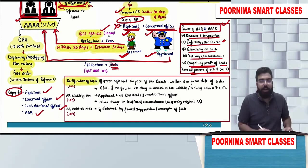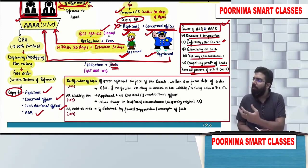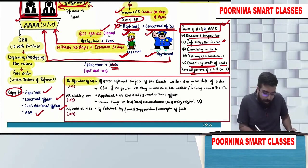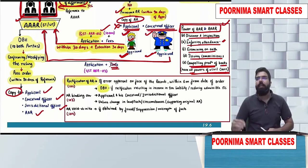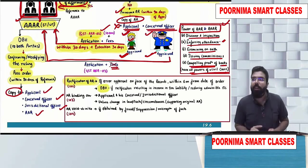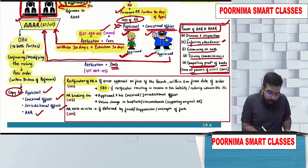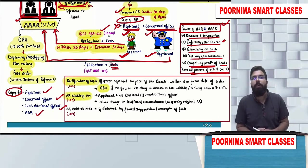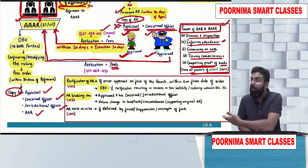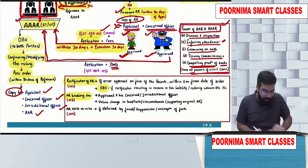If the advance ruling authority finds a mistake which is apparent from the record, it can be rectified within six months. If because of the rectification there is an increase in tax liability or reduction in input tax credit, an opportunity of being heard is to be given. An advance ruling shall be binding on the applicant, concerned officer, and jurisdictional officer, unless there is a change in law, fact, or circumstance.